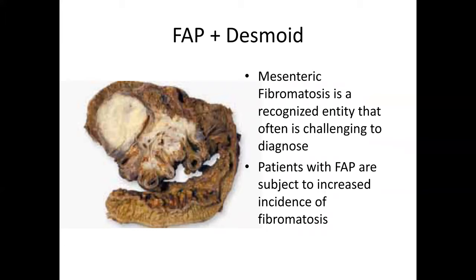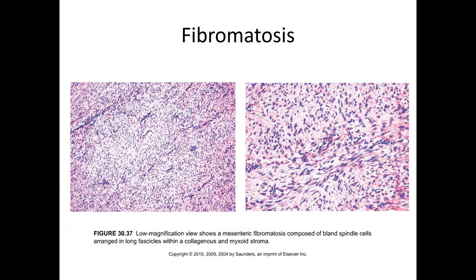Another mesenchymal lesion we may encounter is the intra-abdominal desmoid. This tends to be a more extramural, adventitial-type lesion, but especially in patients with familial adenomatous polyposis, mesenteric fibromatosis can be frequently encountered. So bear that in mind, and look for foci of that type of disease when evaluating a patient resected for familial polyposis. The morphology is similar to fibromatosis elsewhere — a loose, fairly cellular spindle cell proliferation with a little fascicular pattern — and characteristic beta-catenin reactivity would be expected.